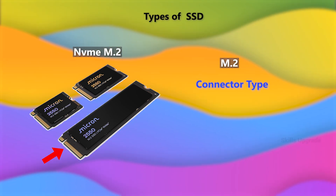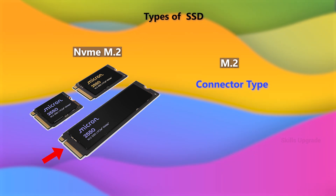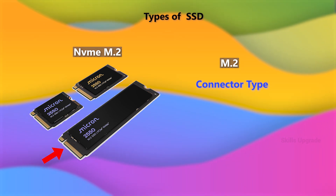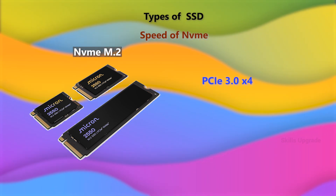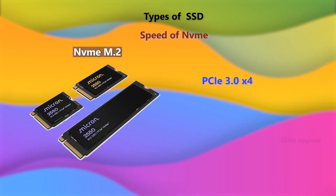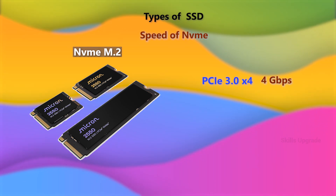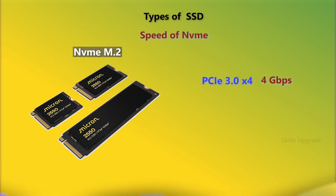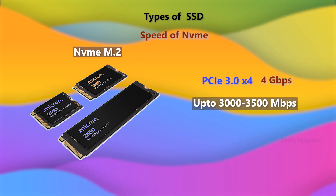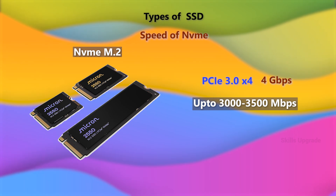The SSD is called NVMe M.2. Let's look at the speeds. PCI Express 3.0 x4 version is 4 Gbps, which is 4000 Mbps. The write speed is 3000 Mbps and the read speed is 3500 Mbps.